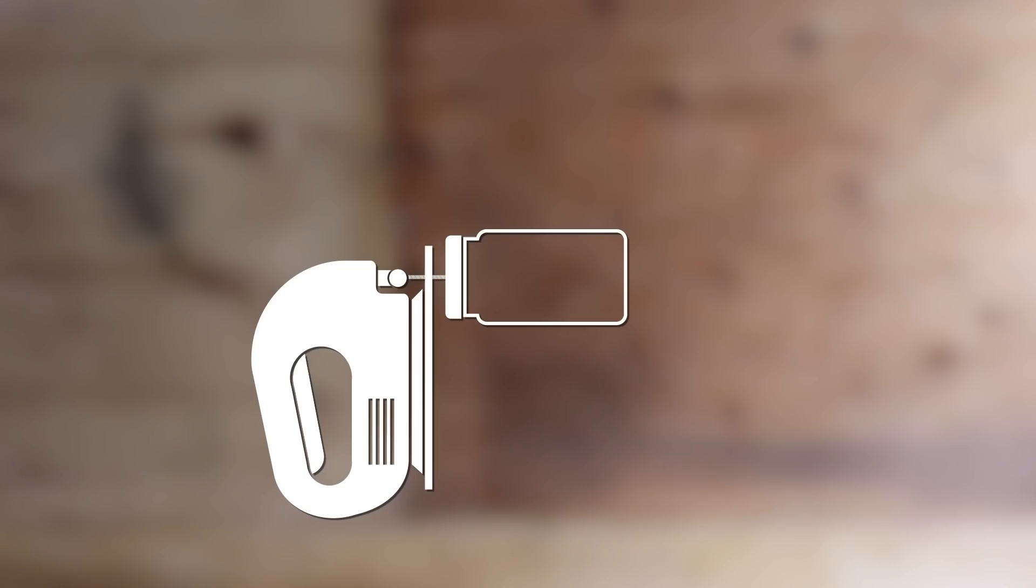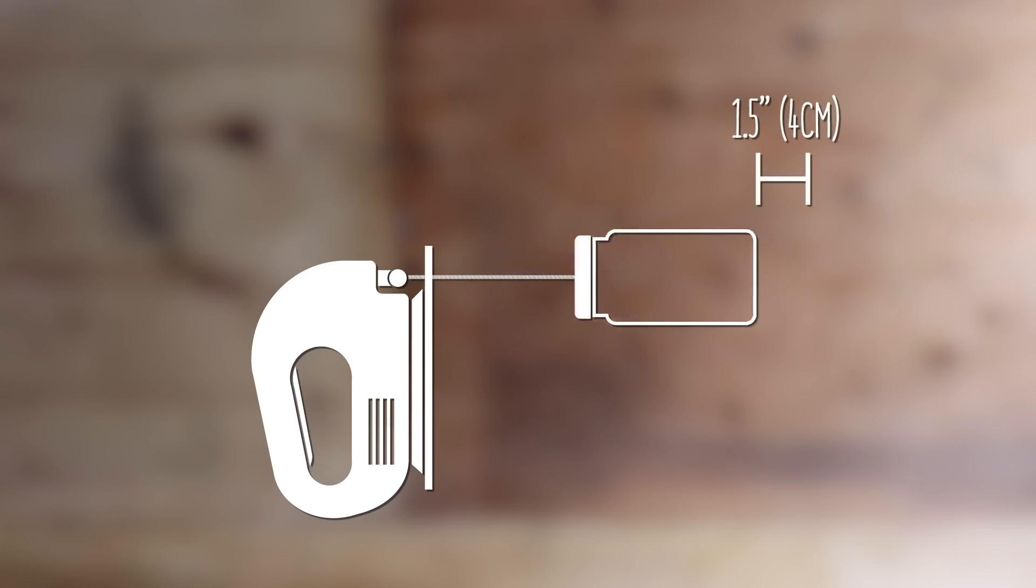So we need our machine to shake the jar farther. But how can you increase the distance traveled by a jigsaw? Well, at first, it may seem like simply adding a longer bolt would do the trick, but as you can see, it doesn't. Instead, what we need is a simple lever, or lever, depending on where you're from.